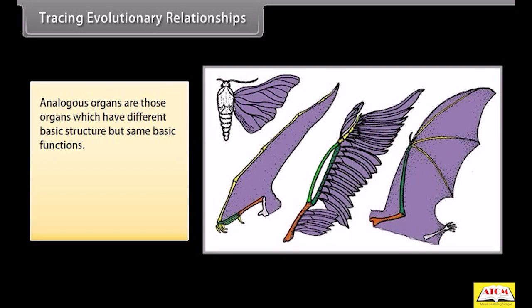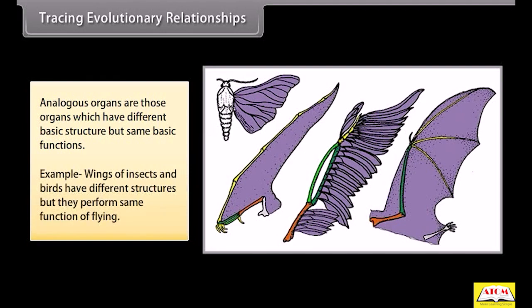Analogous organs are those organs which have different basic structure but the same basic functions. For example, the wings of insects and birds have different structures but perform the same function of flying.